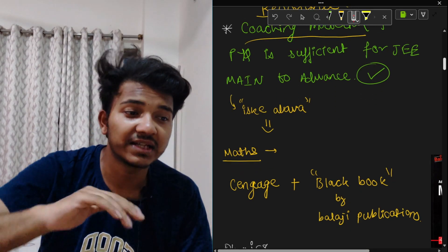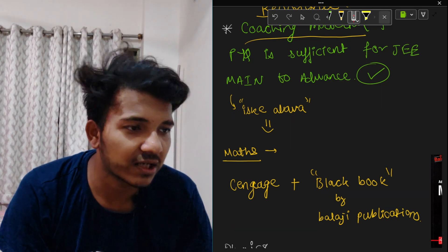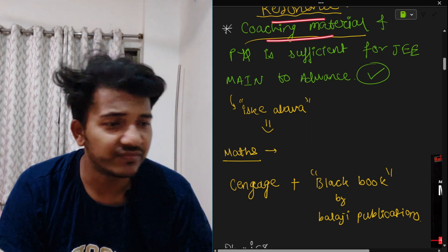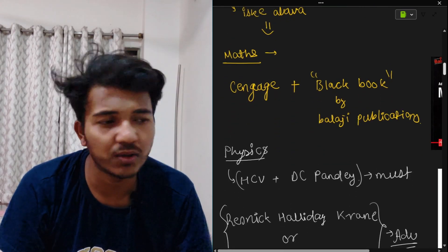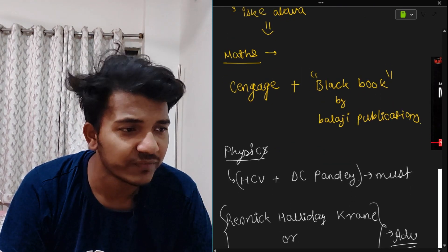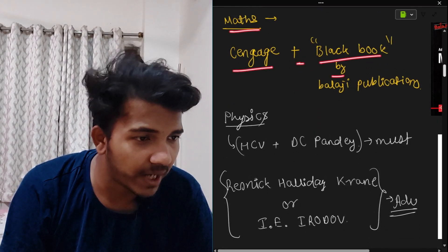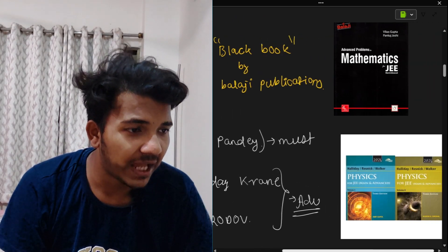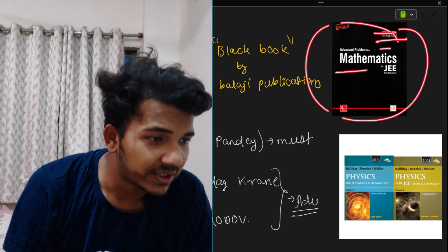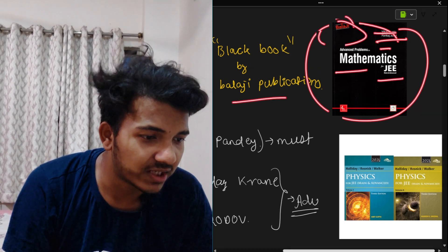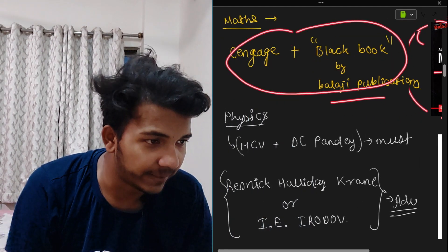If you cannot arrange coaching material, or if you are a self-study or online student, then you can go for reference books. For Maths, use Cengage plus the Black Book by Balaji Publications — Advanced Problems in Mathematics for JEE, written by Pankaj Joshi and Vikas Gupta. This is one of the best books for advanced level. You need to solve both these books for Maths.